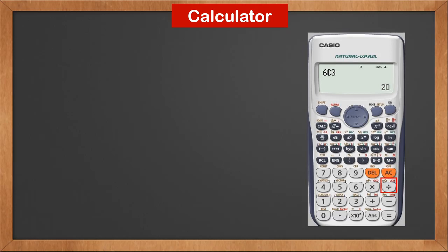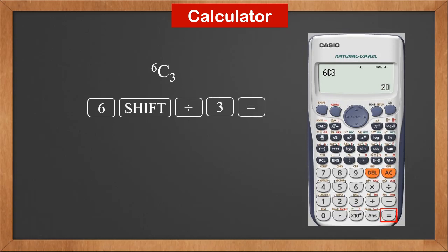On the calculator, we see the nCr sign above the division button. Let's calculate 6C3. You hit six, then shift, division, and three, equal.